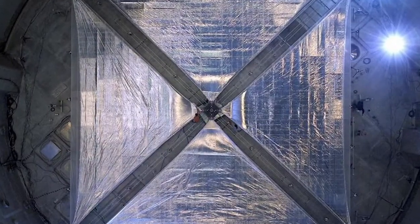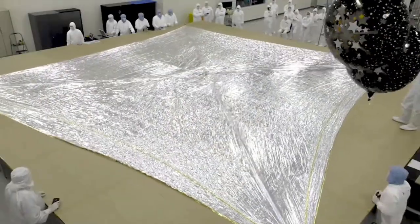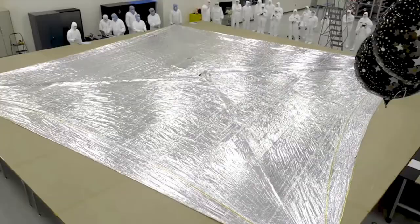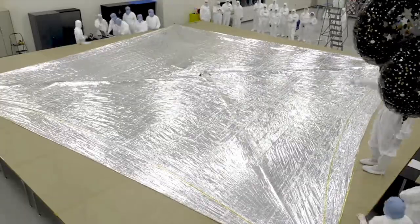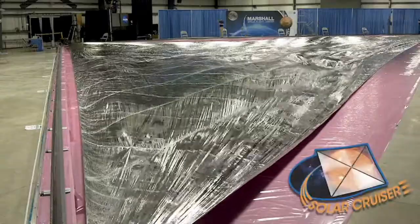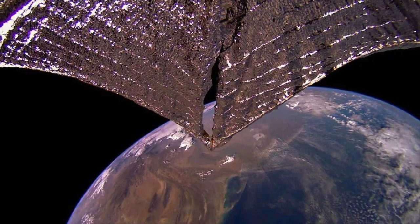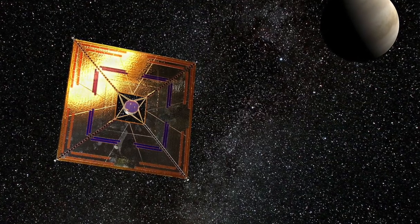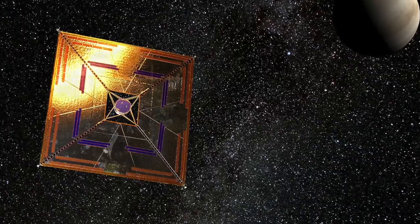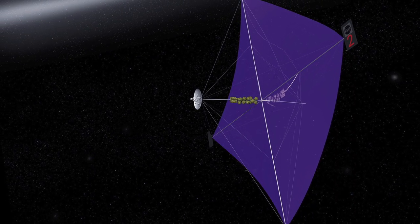For inner solar system travel, sailcraft can deliver payloads to destinations like Mars and return to Earth, functioning as interplanetary shuttles. Particularly for Mars, solar sailcraft could offer cost-effective means of resupplying operations on the planet. Solar sails are versatile for various interplanets, including Mercury, Venus, and Mars. Trips involve rendezvous, orbit entry, or swing-bys for aerodynamic braking.